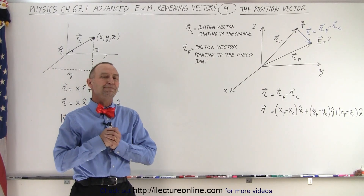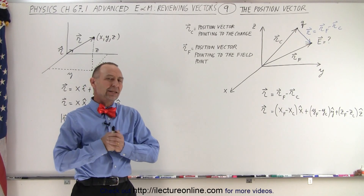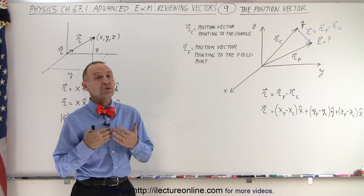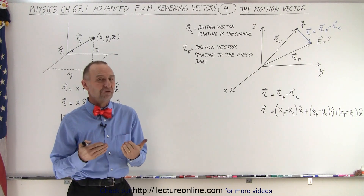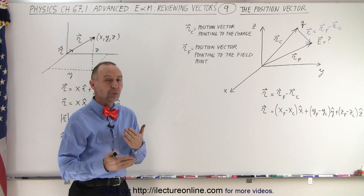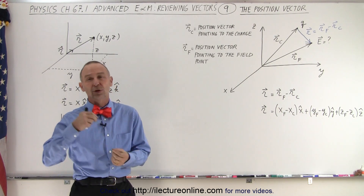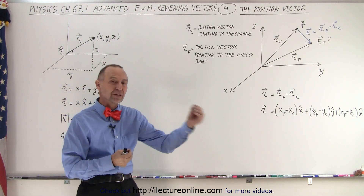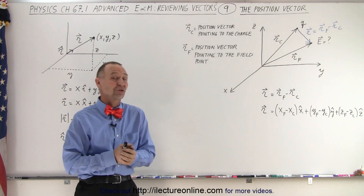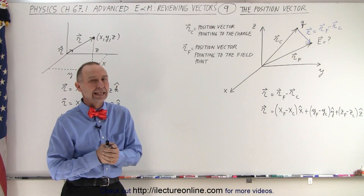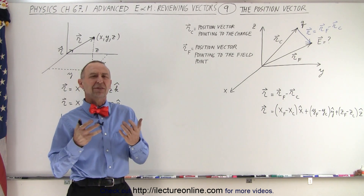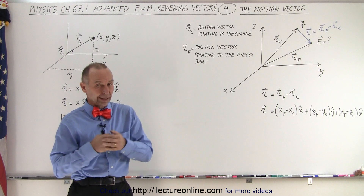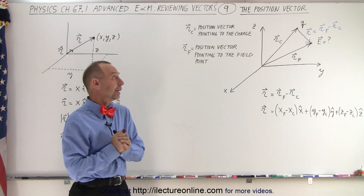Welcome to Electronline. In electricity and magnetism, we often use position vectors to relate where the charge is at and where the electric field is supposed to be measured or calculated, and sometimes that's a source of confusion. So let's try to clear it up a little bit.